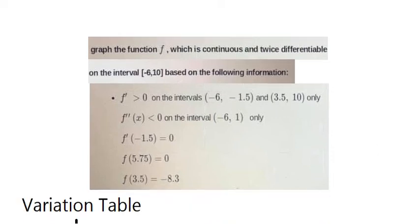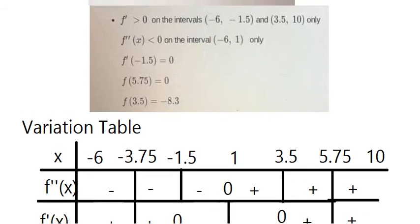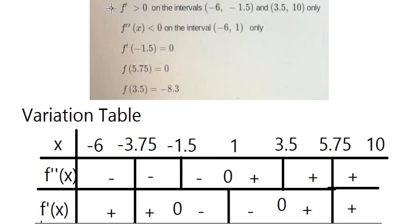Here is the variation table I drew. The first derivative is positive on two intervals: from minus 6 to minus 1.5, and from 3.5 to 10. So we have the positive sign there. The second derivative is negative on the interval from minus 6 to 1, so from minus 6 to 1 it is negative.